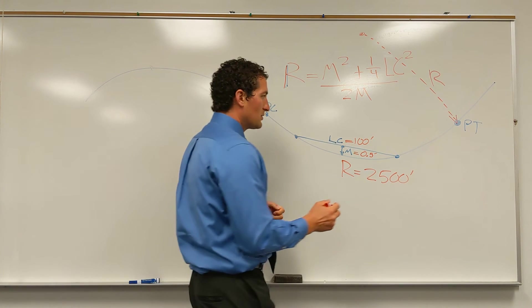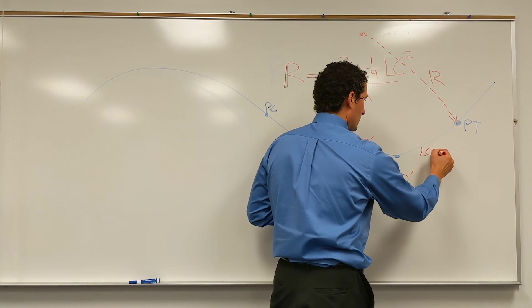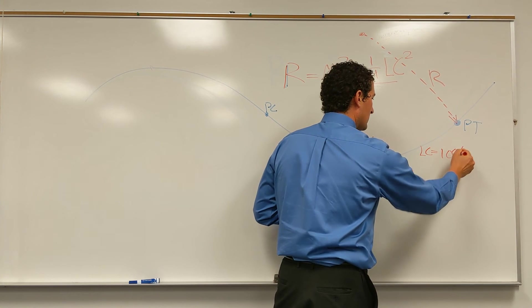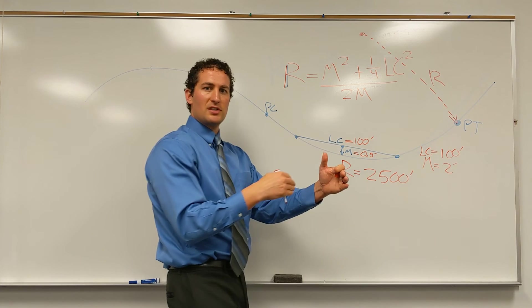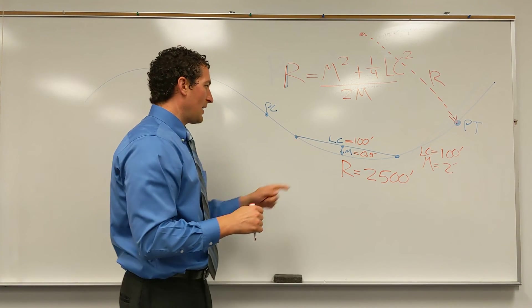If we change these values, so let's say that our long chord is still 100 feet, but our middle ordinate now is two feet, so we've got a much larger distance now between the chord and the curve.